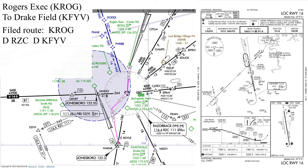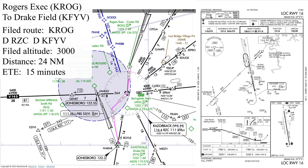Our filed route will be Rogers Airport direct Razorback VOR direct Fayetteville. We'll file for an altitude of 3,000 feet. While this is lower than both the EROCA on the en route chart and the MSA on the approach chart, it is the top altitude specified on the Rogers departure. A quick check of the VFR chart shows it to be at least 1,000 feet above all obstacles between Rogers and Razorback VOR. The entire flight is 24 track miles and takes around 15 minutes in the 172, so things will happen rather quickly.